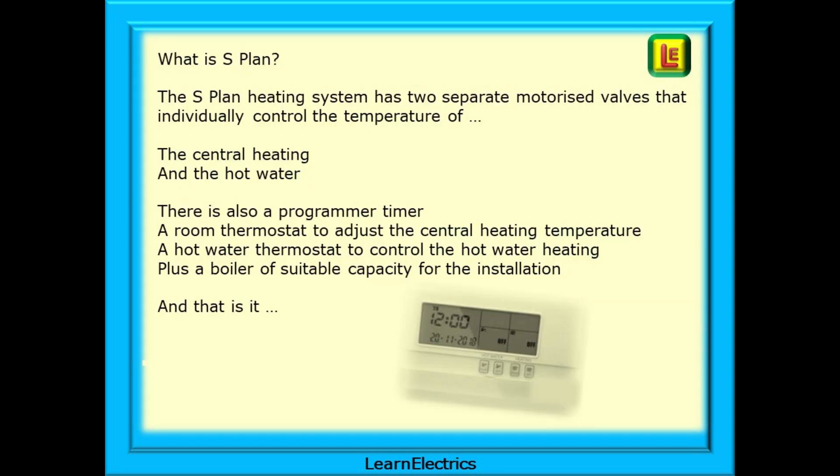So what is S-Plan? As you will see, the S-Plan heating system has two separate motorized valves that individually control the temperature of the central heating and the hot water. There is also a programmer and timer to set the on and off periods. A room thermostat is used to control the central heating temperature and a hot water thermostat will control the hot water heating.